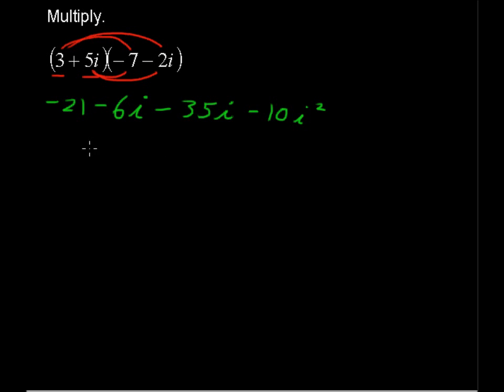Let's combine some like, I'll call them like terms. Again, these i's are not variables, but you can think of them like that to combine this imaginary part of the complex number.